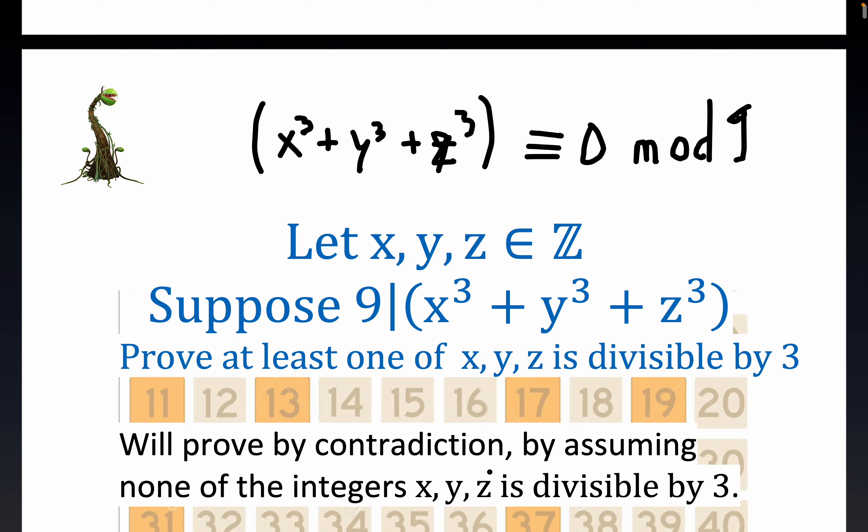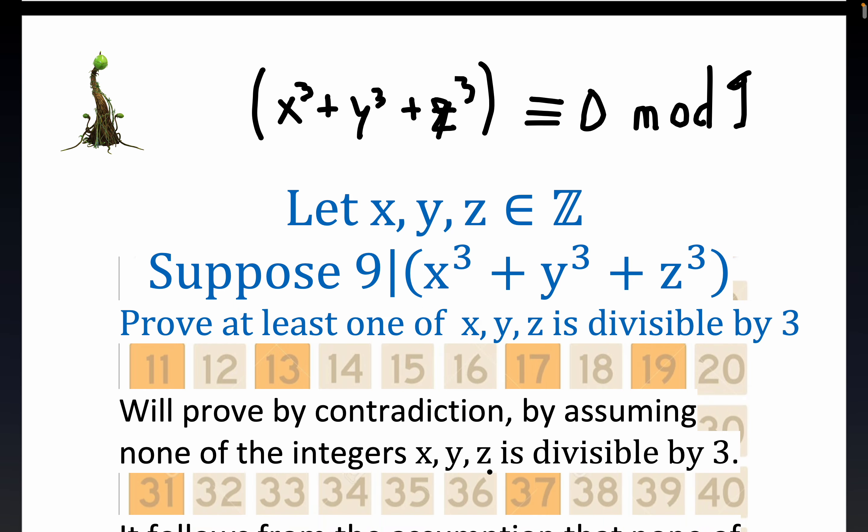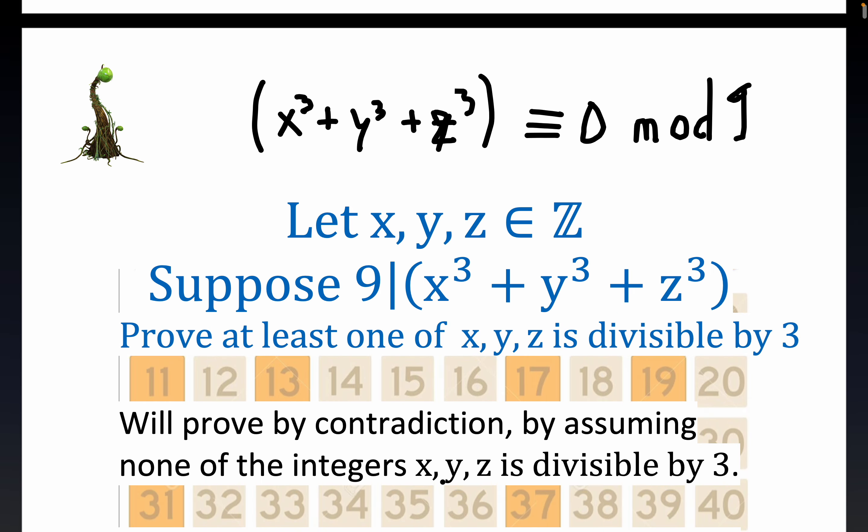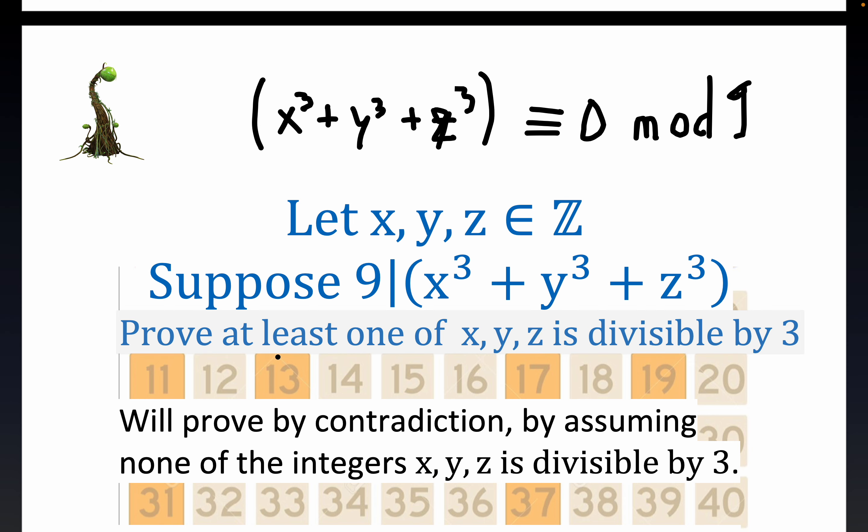Now we're going to do a proof by contradiction here. Notice it says prove that at least one of x, y, and z is divisible by 3. Well, we're going to assume that none of these guys x, y, and z is divisible by 3. At least one could be 1, 2, or 3, right? But the negation of that, the logical negation, is that none of them are divisible by 3. So we will see if we get a contradiction, which will prove what we're trying to prove.